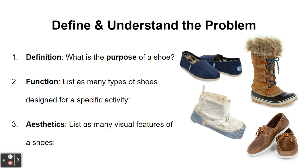I want you to list as many types of shoes as possible. Basketball is a sport and that is an example of a specific shoe designed for that activity. Three, aesthetics — list as many visual features of shoes as possible. By visual features, I mean look at your shoes on your feet right now, look at your friend's shoes, think about the shoes that you own or have seen before. If you can break those down into smaller components, what are you seeing on there? One example is a shoelace — not every shoe has a shoelace, but shoelaces are one component. Look through all the different components of a variety of different shoes and list all the different features.